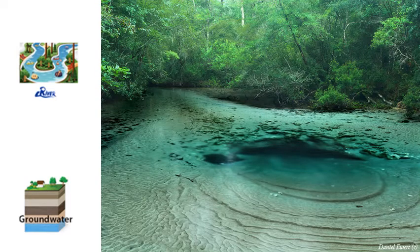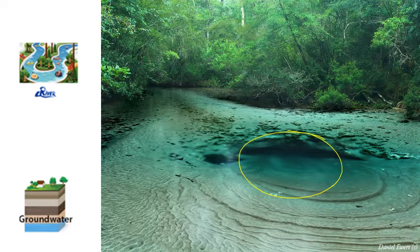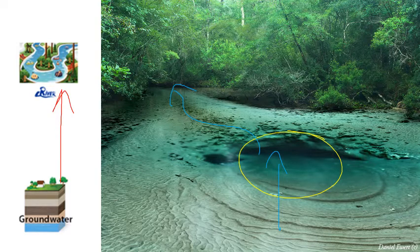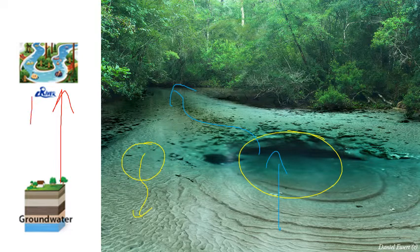Now, groundwater. Sometimes water comes straight up out of the ground — like through a cave — and piles up, then starts to flow as a river that has its source from underground. So water from the ground can make a river. It's also true that some river water seeps back down into the ground. So this is one of those two-way streets where water can move in both directions between groundwater and rivers.